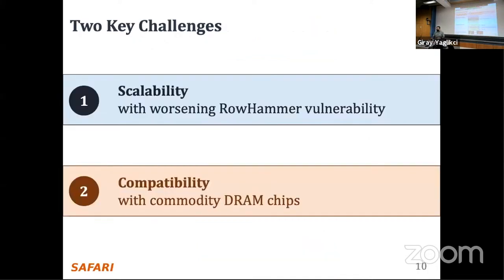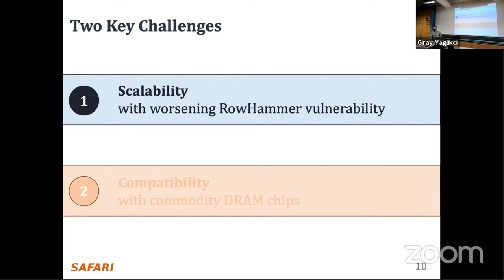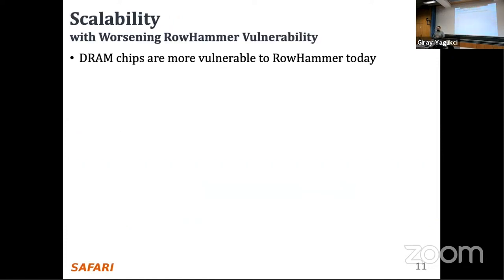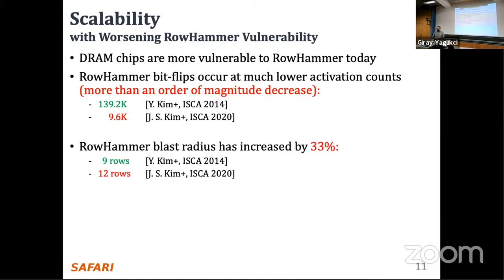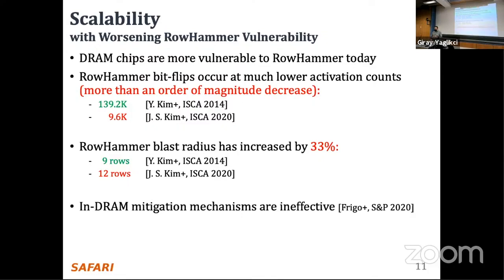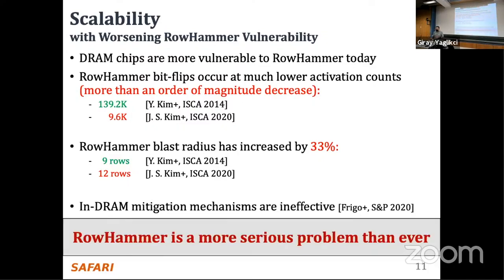There are two challenges these mitigation mechanisms face. The first is scalability with worsening Rowhammer vulnerability. Recent work showed that DRAM chips become more vulnerable to Rowhammer — Rowhammer bitflips can occur at much lower activation counts, and hammering a row can disturb more rows than before. Furthermore, indirect mitigation mechanisms are shown to be ineffective. Therefore, Rowhammer is a more serious problem than ever today.